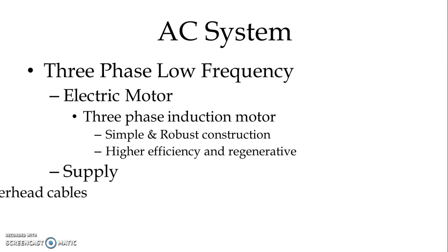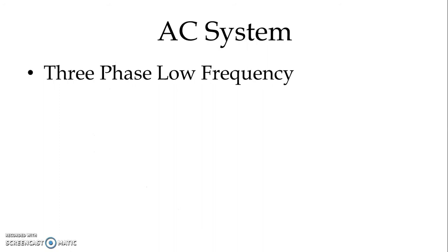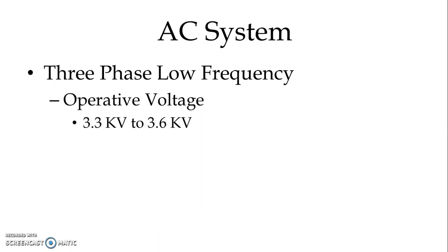Since it is a three phase system, two overhead cables are used and the rail is used as the third conductor. The operative voltage is normally in the range of 3.3 kV to 3.6 kV and the frequency is 16.66 Hz.